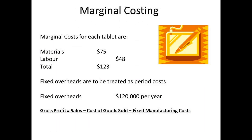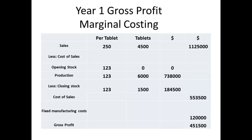Now we consider marginal costing. We know the marginal cost is $123 per tablet. We will also have period costs of $120,000 per year. Gross profit will equal sales, less cost of goods sold, less fixed manufacturing costs. In year 1, sales are $1,125,000. Cost of sales will be $553,500 — that is the cost of 6,000 less 1,500 units. We must then also subtract $120,000 fixed costs to give a gross profit of $451,500 in year 1.